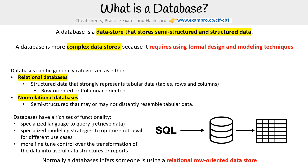Normally, when someone says 'database,' they are usually referring to a relational row-oriented data store — something like Postgres or MySQL. A relational row store is usually the default, but obviously there are broader terms that fall under the database umbrella.